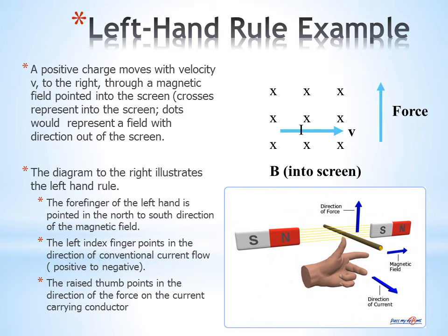The diagram to the right illustrates the left-hand rule. The forefinger of the left hand is pointed in the north-south direction of the magnetic field. The left index finger points in the direction of conventional current flow, positive to negative. And the raised thumb points in the direction of the force on the current carrying conductor.